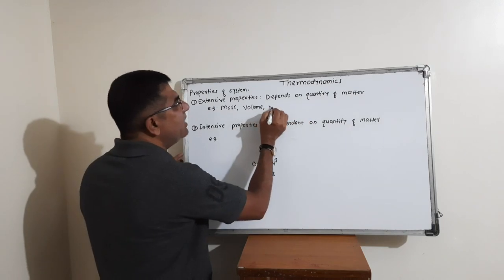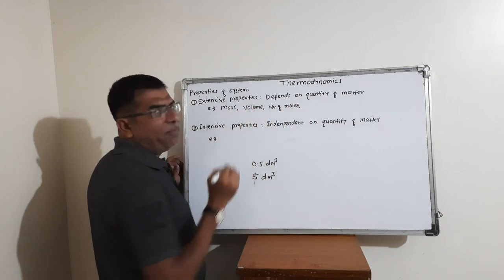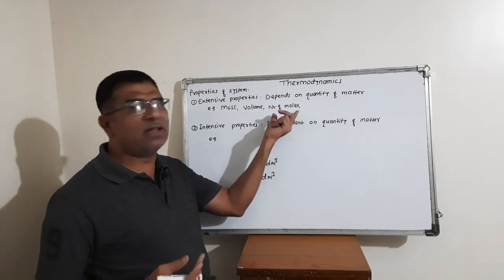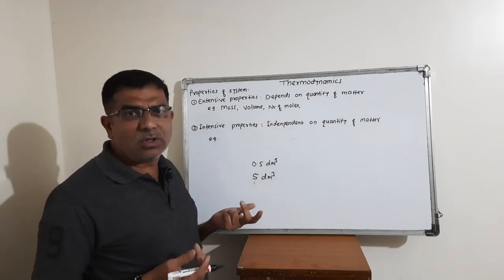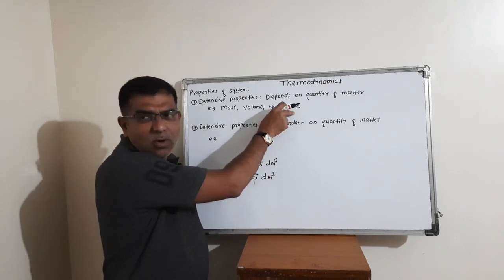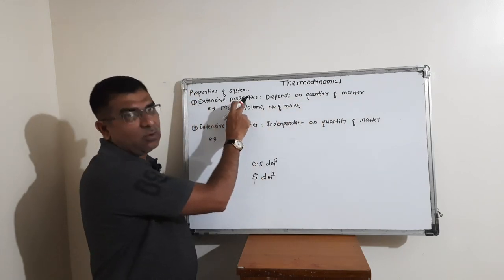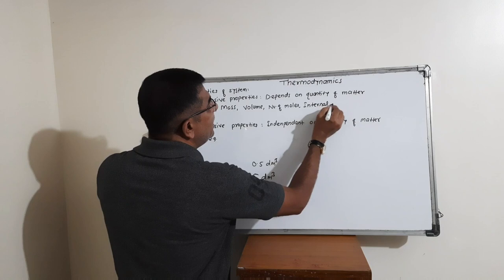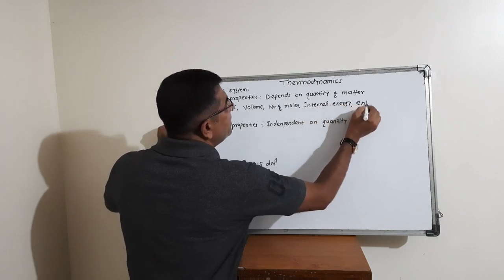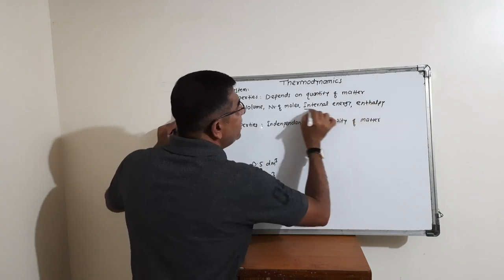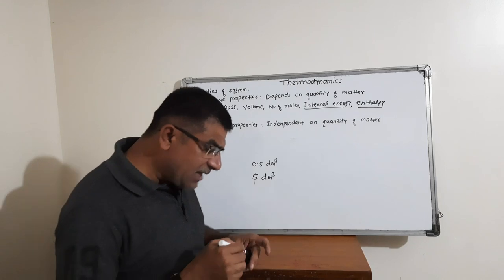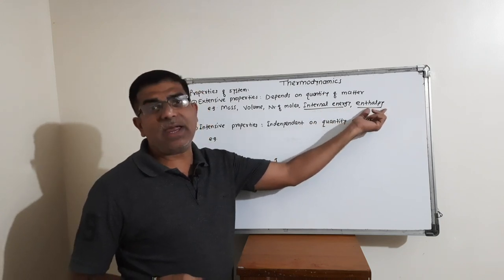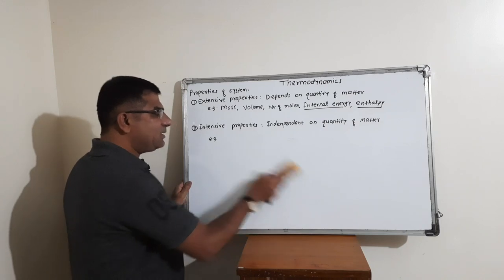Another example of an extensive property is the number of moles. As you studied in mole concept, molar mass is one mole of a substance — the number of moles is a property which depends on quantity of matter, so it is called an extensive property. The next examples are internal energy and enthalpy — these two properties are also extensive properties in thermodynamics.